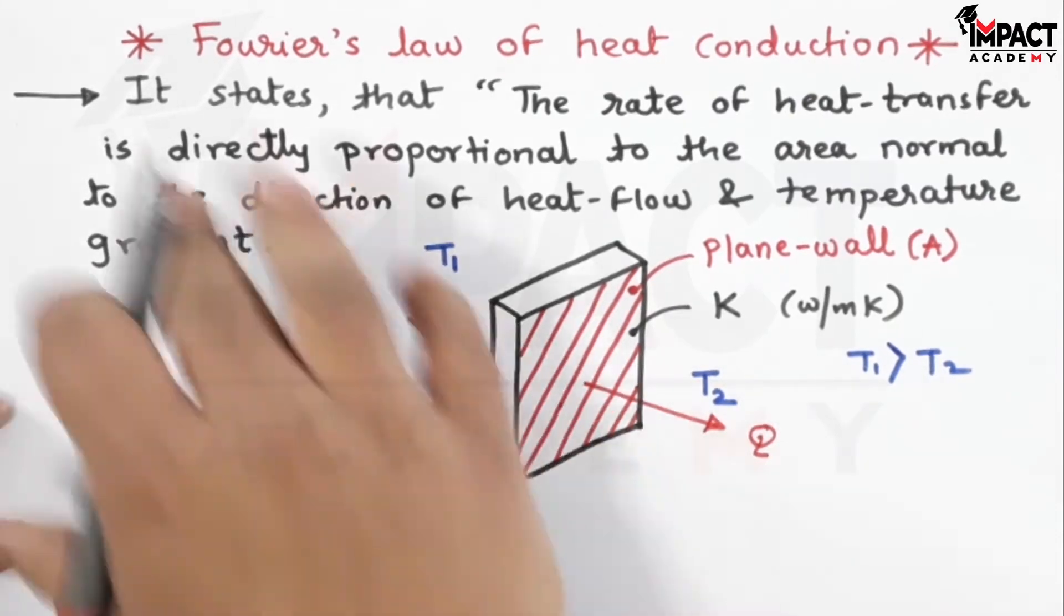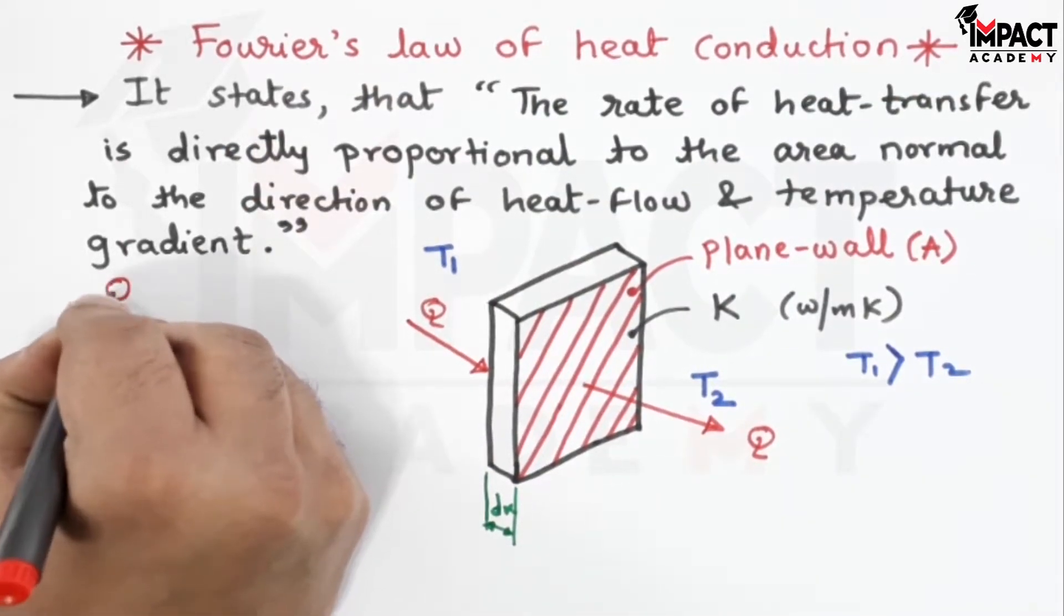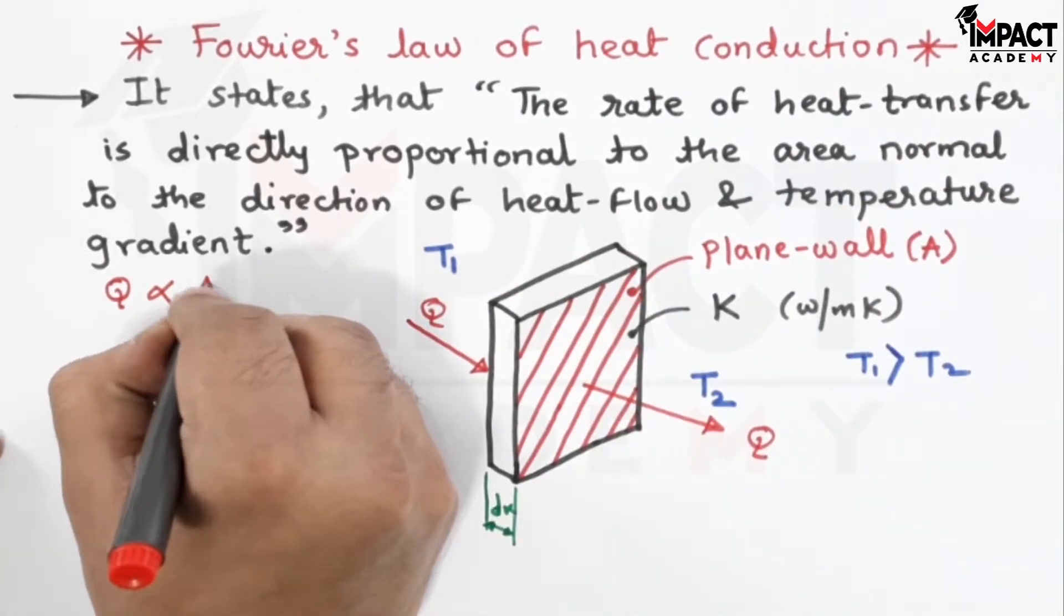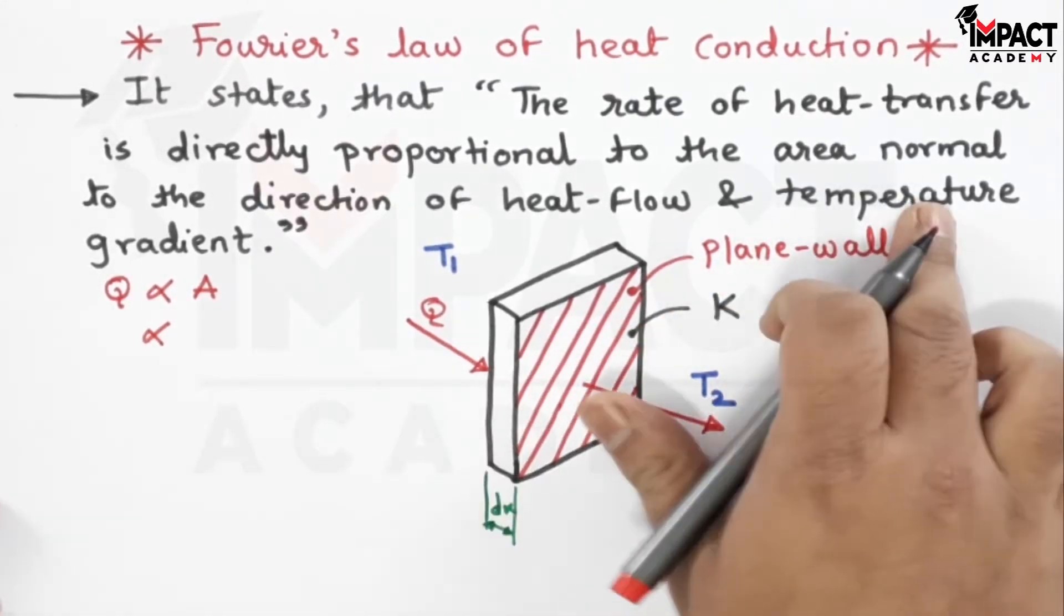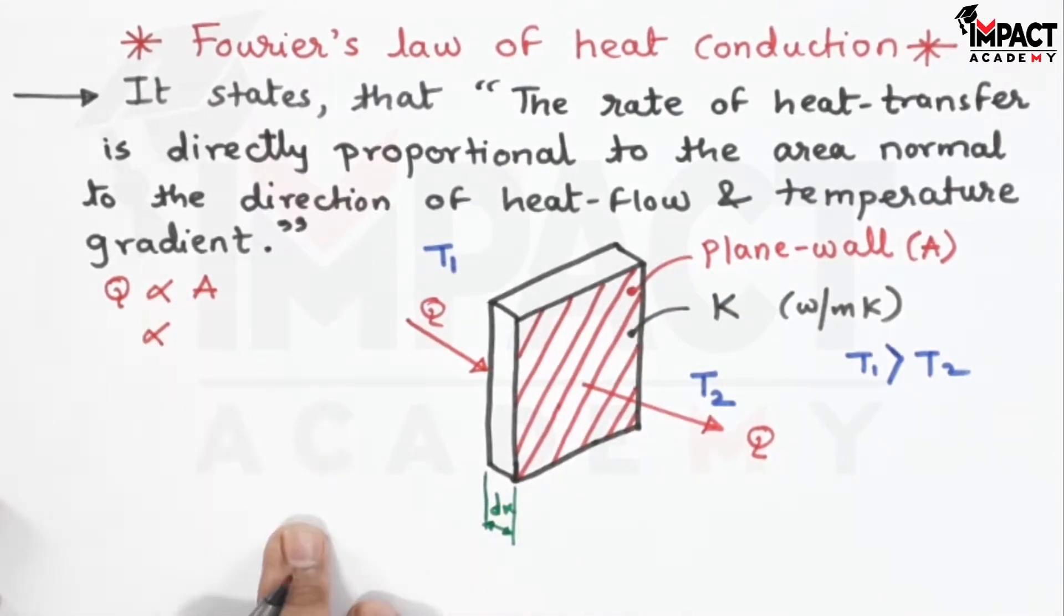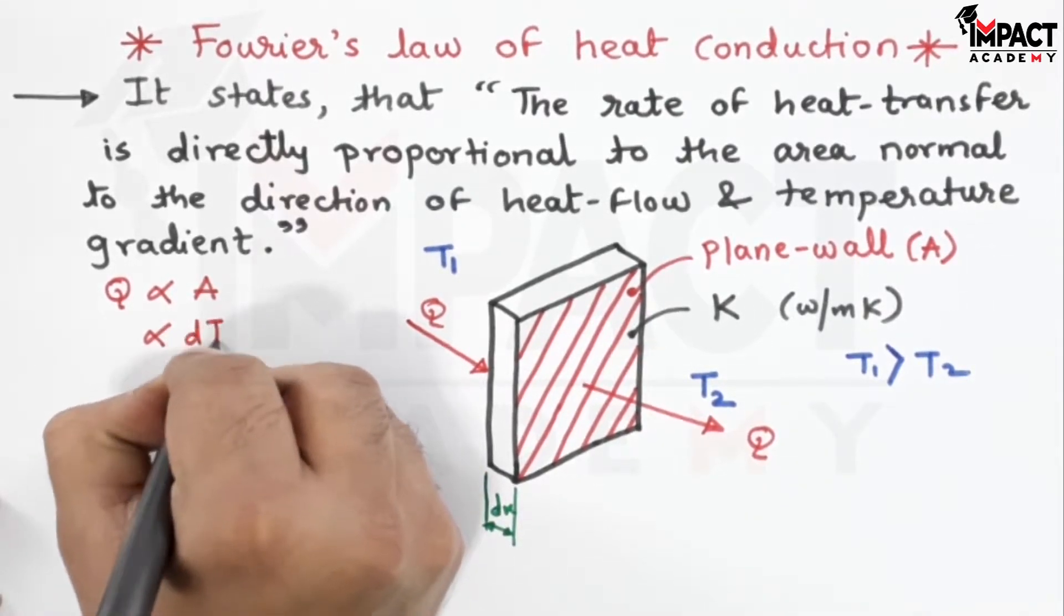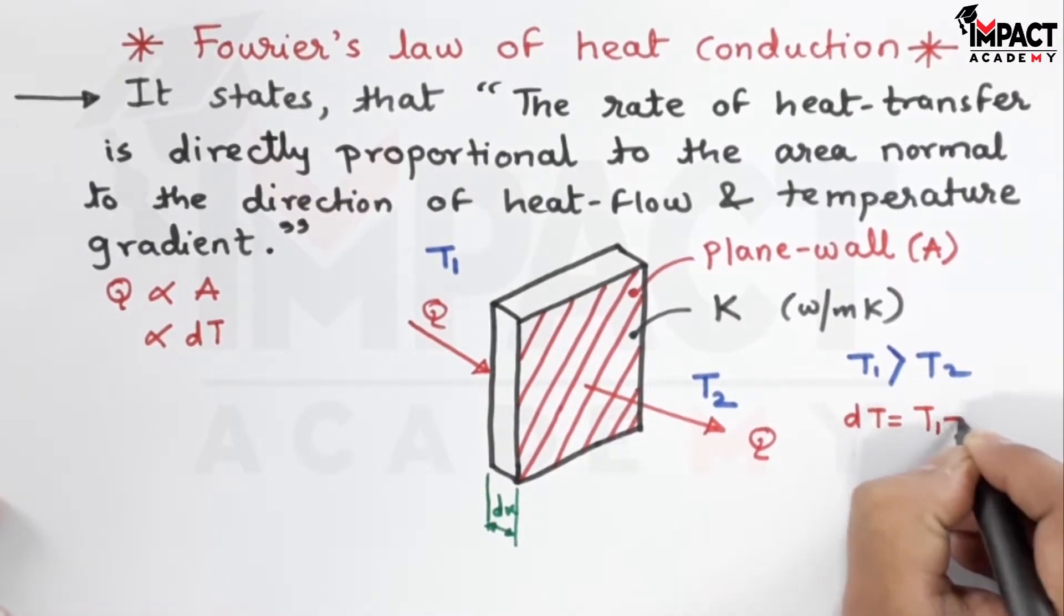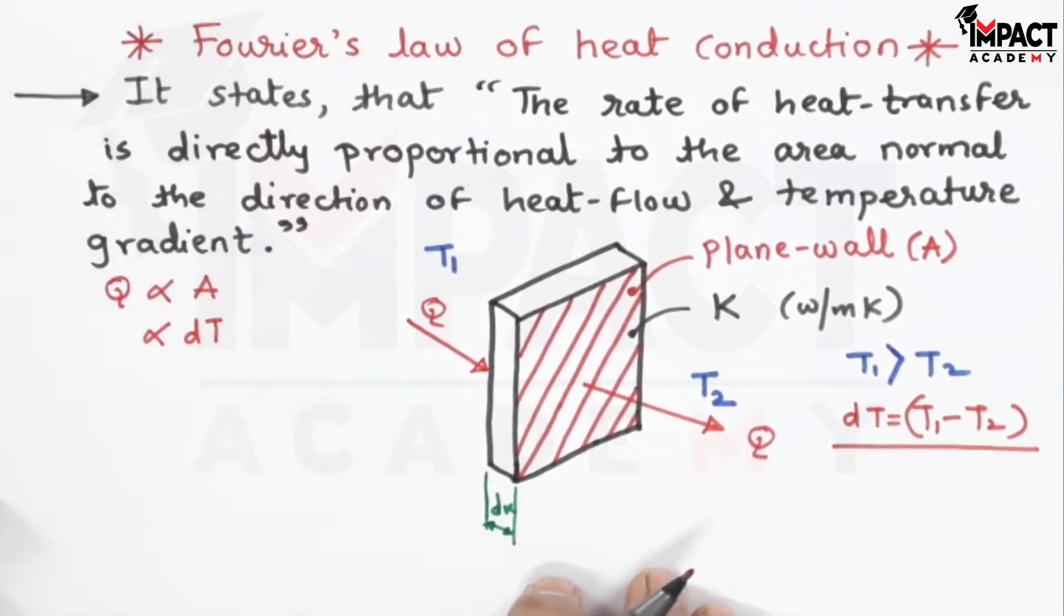So here, whatever the statement is written, that can be summarized in this way: that the rate of heat transfer is directly proportional to the area, and it is also directly proportional to the temperature gradient. Temperature gradient is the change in temperature denoted by DT, and DT is equal to T1 minus T2, the difference between the higher temperature and the lower temperature.